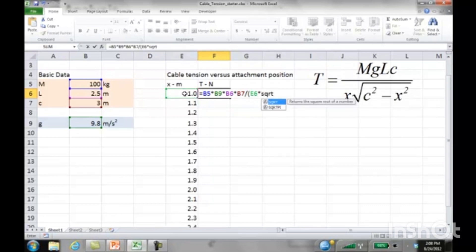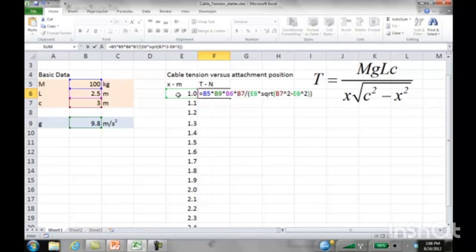Times square root. In Excel we have built-in functions. The square root function requires a parenthesis. Inside the parenthesis we have C squared, so caret 2 in Excel, minus X squared, that's cell E6 squared. Be sure to close the parenthesis for the square root, close the parenthesis for the denominator, and press enter. That is the tension at 1 meter out if we attach that cable 1 meter out from the wall.